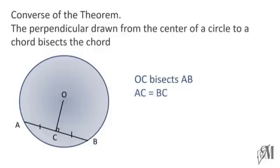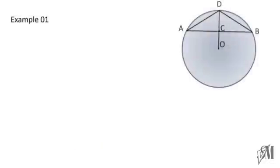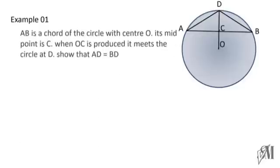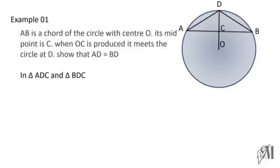Let's look into an example. Here AB is a chord of the circle with center O, its midpoint is C. OC is produced and it meets the circle at D, and we have to show AD is equal to BD. Let's consider the two triangles ADC and BDC.